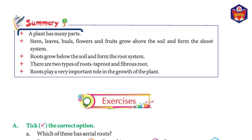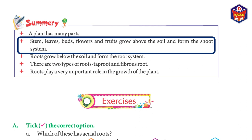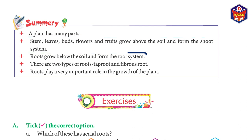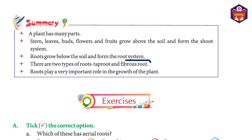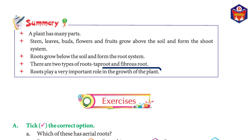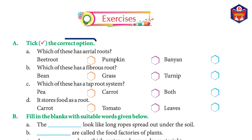Summary: A plant has many parts. Stem, leaves, buds, flowers, and fruit grow above the soil and form the shoot system. Roots grow below the soil and form the root system. There are two types of roots — taproot and fibrous root. Roots play a very important role in the growth of the plant.